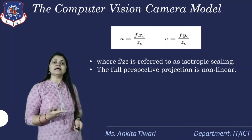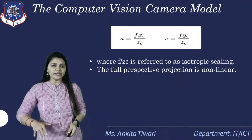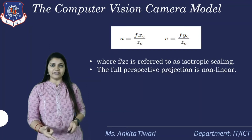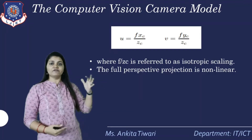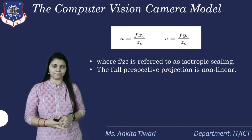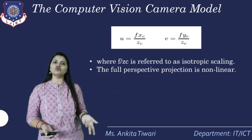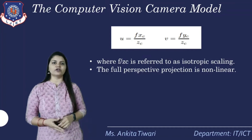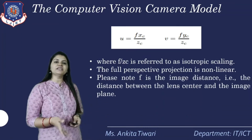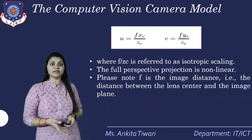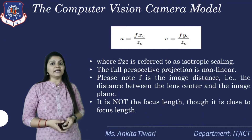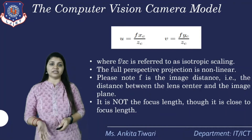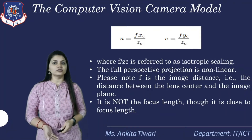The full perspective projection is non-linear, and the formula for finding the scaling factor is defined by U and P, which equals F/Zc. Here Xc and Yc are the two parameters — the pixel coordinates for the camera. P is known; F is the image distance — the distance between the lens center and the image frame — which is close to but not the same as the focal length.